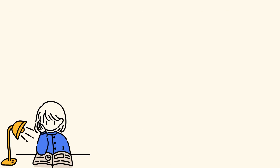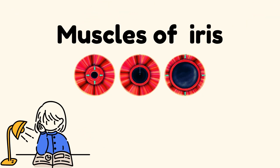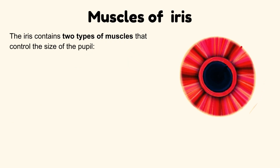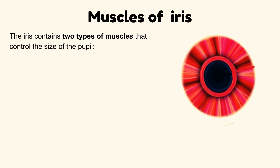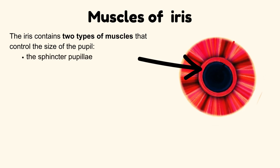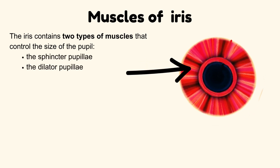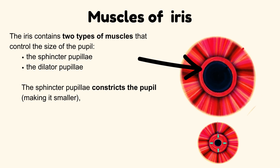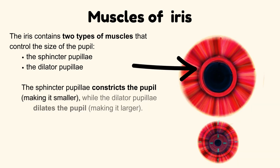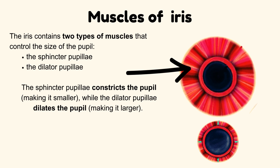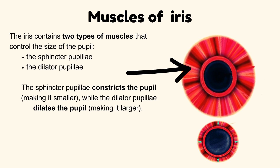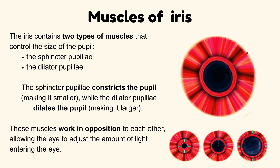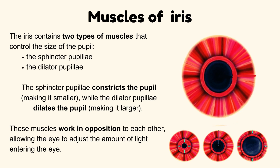Now we will discuss the main topic: the muscles of the iris. The iris contains two types of muscles that control the size of the pupil: the sphincter pupillae and the dilator pupillae. The sphincter pupillae constricts the pupil, making it smaller, while the dilator pupillae dilates the pupil, making it larger. These muscles work in opposition to each other, allowing the eye to adjust the amount of light entering.